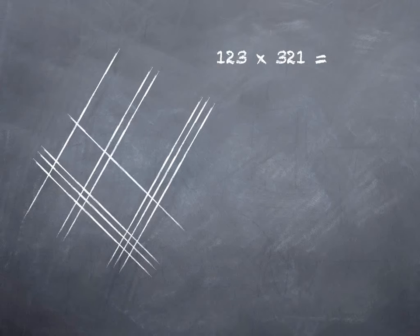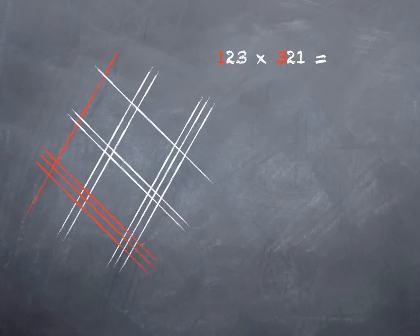There's three hundreds, two tens, and one one. And let's color code them again. Hundreds, tens, ones. Well, if I look out here where my ones intersect my ones, I wind up with three intersections. And so I leave that three in the ones place.